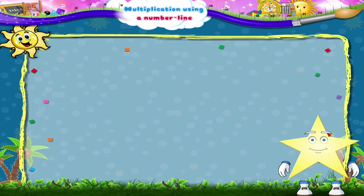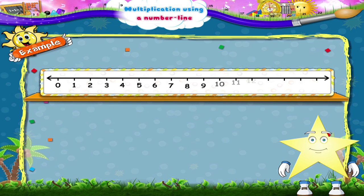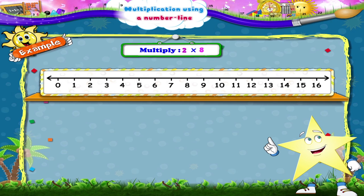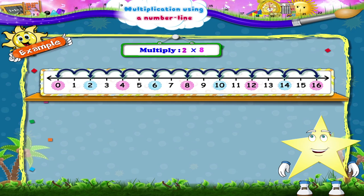Let us consider the next example. Multiply two eight times. Now Starry, will you jump? Yes, starting from zero move to two, then four, six, eight, ten, twelve, fourteen, sixteen.